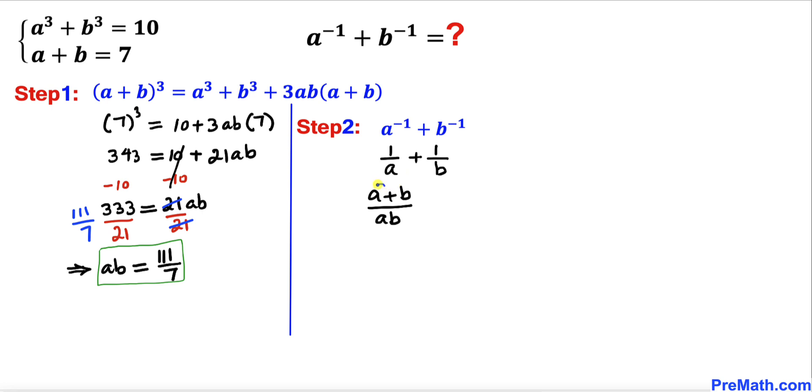Now we can see that a + b has been given to us as 7, and likewise ab at the denominator is the same as 111/7. So let's go ahead and make a substitution: 7 divided by 111/7.